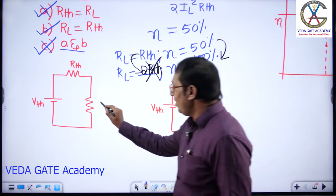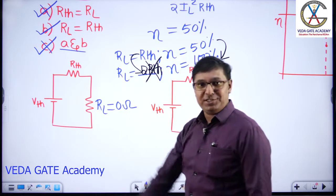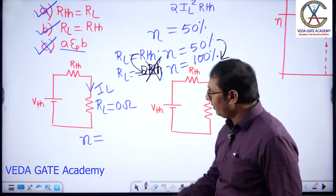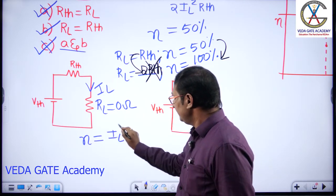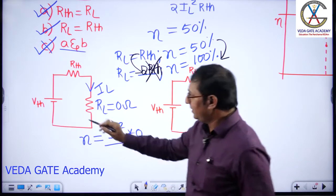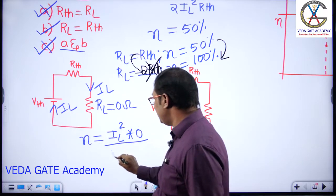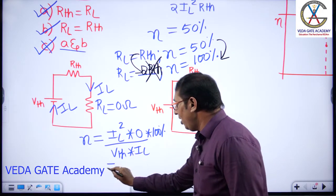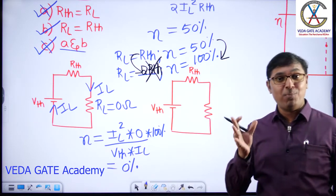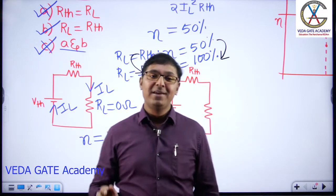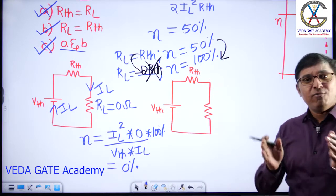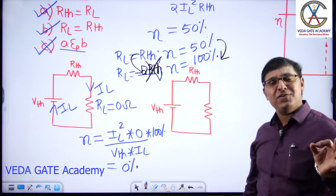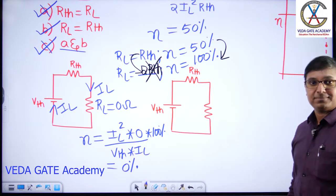Let us take RL equal to 0 ohms and find the efficiency. Some current IL flows in the circuit. Output power is IL² × 0 = 0. Input power is VTH × IL. Efficiency is 0 divided by VTH × IL × 100 percent, which equals 0 percent. When load resistance is 0 ohms, efficiency is 0 percent.